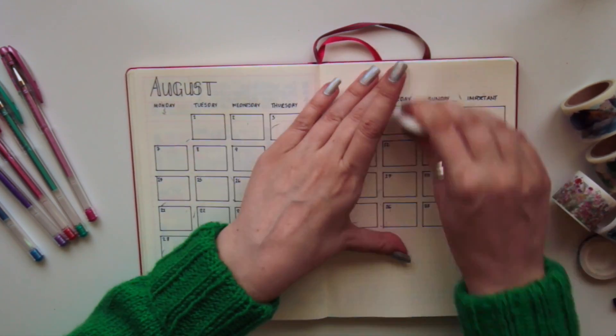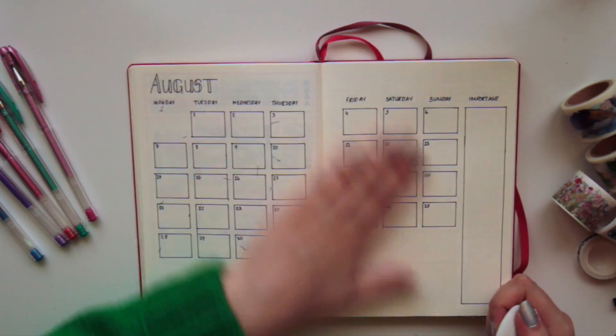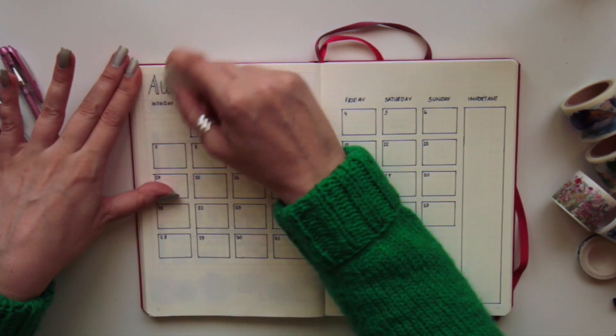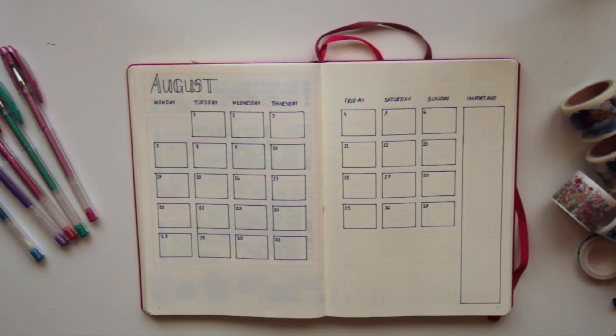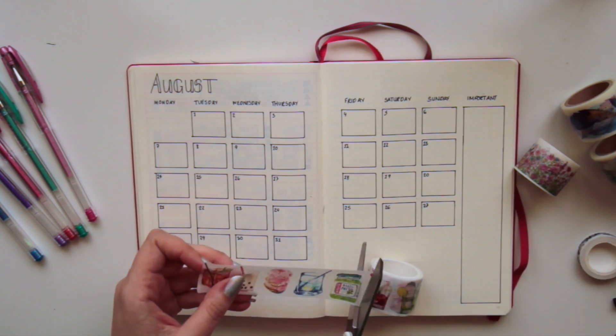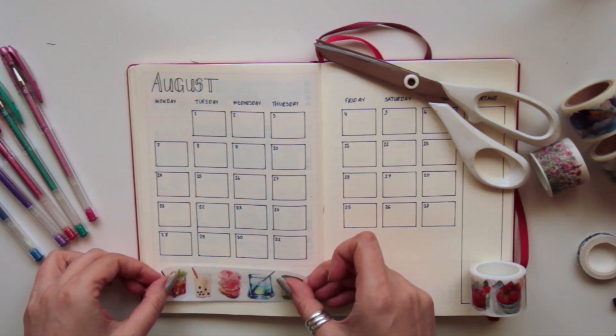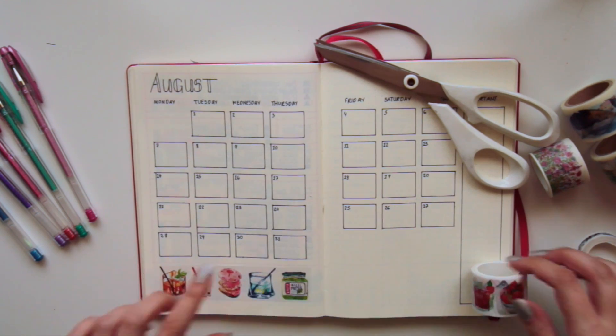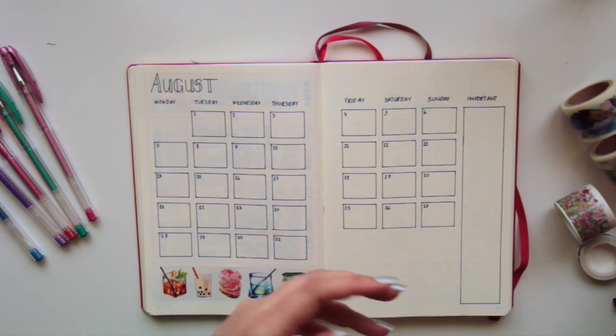This is the standard monthly log that I use every month because I love it. I just draw out the boxes and then I have a large box for the important things on the corner. As always, I'm using washi tape to decorate because it makes it look really pretty.